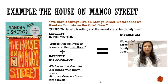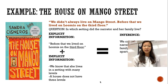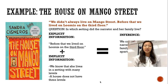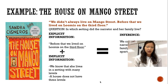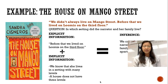Moving on, we have another example from the novel The House on Mango Street by Sandra Cisneros. The narrator says, 'We didn't always live on Mango Street. Before that, we lived on Loomis on the third floor.' The question is: in which setting did the narrator and her family live? The explicit information is that they lived on Loomis on the third floor. Using implicit knowledge, we know a house doesn't typically have a third floor unless there's an attic, but the narrator doesn't specify an attic. So the inference we come to is that the narrator and her family lived in an apartment.